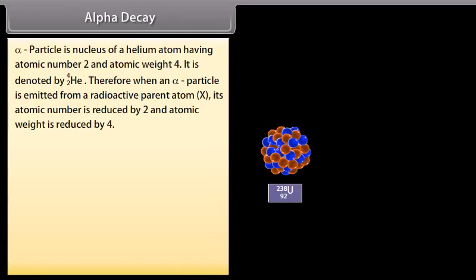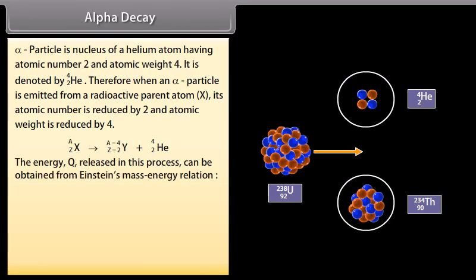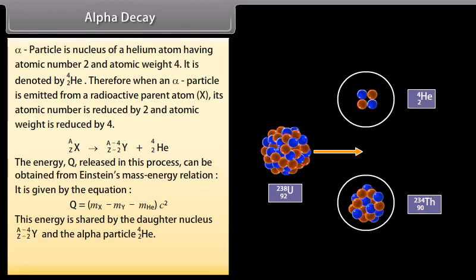Alpha decay: an alpha particle is the nucleus of a helium atom having atomic number 2 and atomic weight 4. When an alpha particle is emitted from a radioactive parent atom X, its atomic number is reduced by 2 and atomic weight is reduced by 4. The energy Q released in this process can be obtained from Einstein's mass-energy relation: Q = (Mx − My − MHe) × c². This energy is shared by the daughter nucleus and the alpha particle.